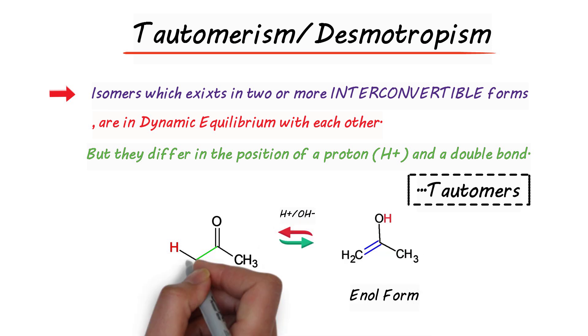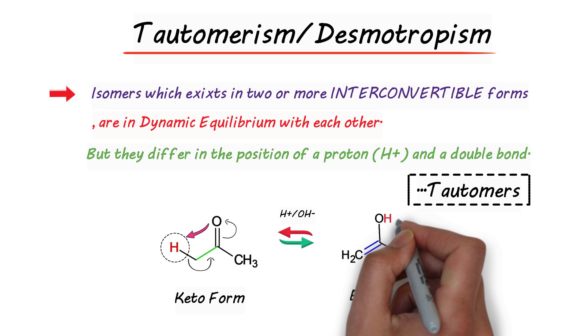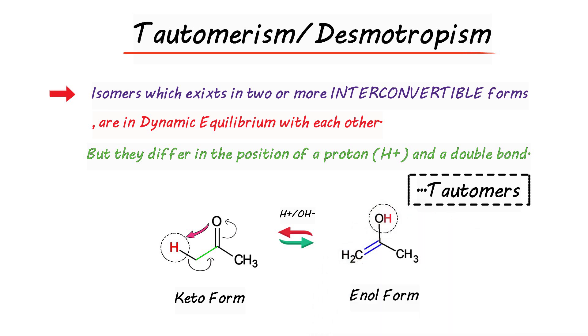As you can see from the cleavage of bonds, the hydrogen atom as encircled is migrated as H+ ion to that of oxygen atom. This leads to the change in the position of double bond also. Thus, as the two molecules are interconvertible and in dynamic equilibrium involving the migration of H+ and a double bond, these are therefore tautomers.